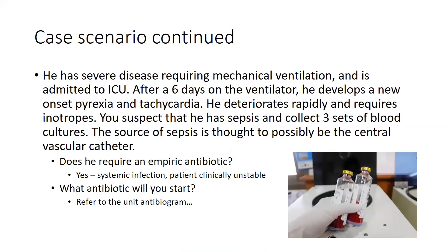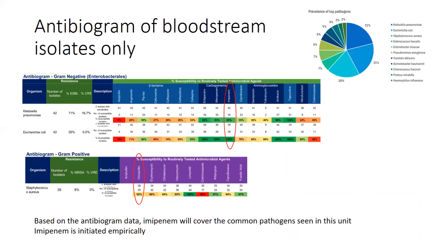This patient has severe disease requiring mechanical ventilation and is admitted to ICU. After six days on the ventilator, he develops new onset pyrexia and tachycardia, rapid deterioration, and requires inotropes. Sepsis is suspected, three sets of blood cultures are sent, and it's thought the source may be the central vascular catheter. Does the patient need empiric antibiotic therapy? Yes — this is a clinically unstable, systemically infected patient. We refer to the unit's antibiogram: around 20% of infections are caused by Klebsiella pneumoniae, another 20% by E. coli, and Staph aureus another 20%.